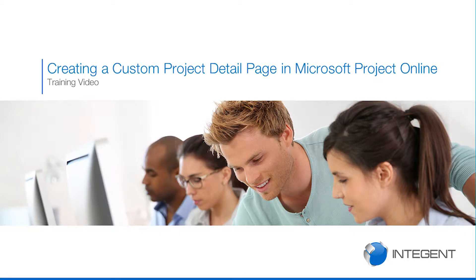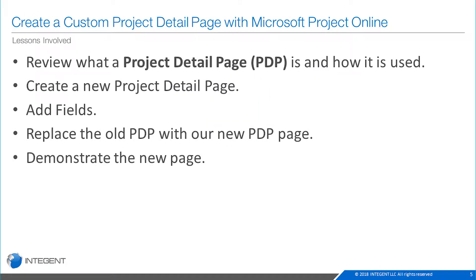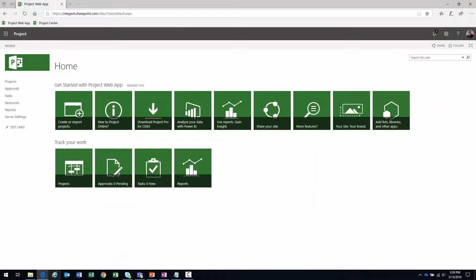Hello everyone, welcome to today's training video. Today we're going to be talking about creating a custom project detail page with Microsoft Project Online. My name is Daniel Bell and I am going to be your instructor today. We're going to go through a few steps: first we'll review what a project detail page is, then create a new one, add fields to it, replace the old page with the new one, and demonstrate how that new page functions within the tool.